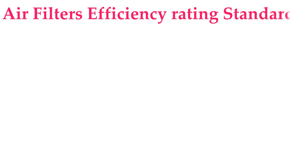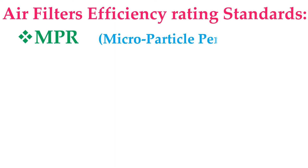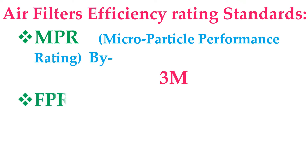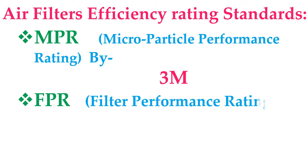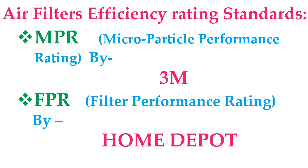Other air filter efficiency ratings are MPR and FPR. MPR — Microparticle Performance Rating — was developed by 3M Filtration. FPR — Filter Performance Rating — was developed by Home Depot.